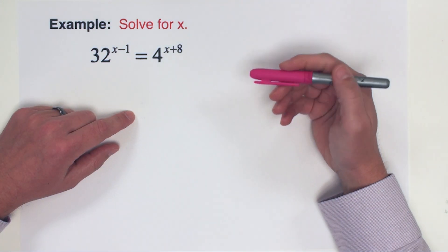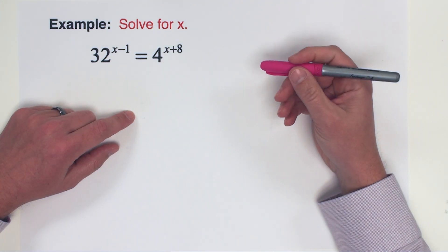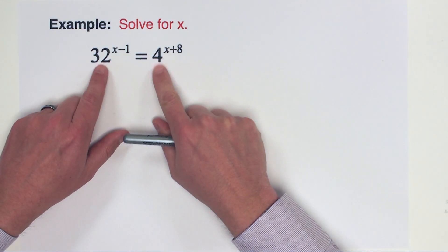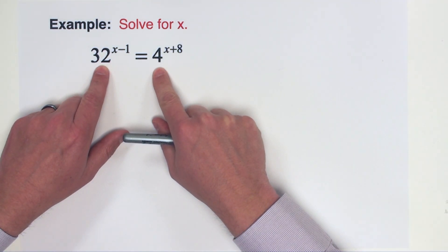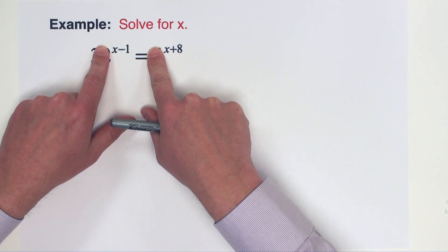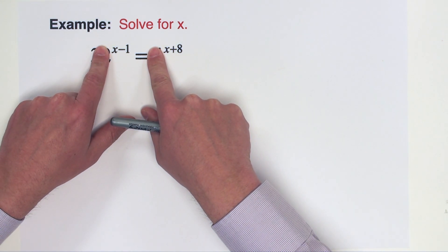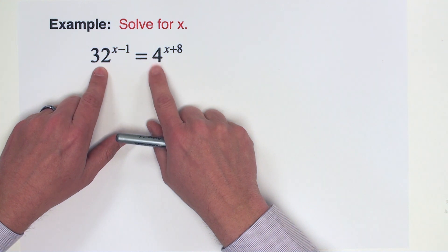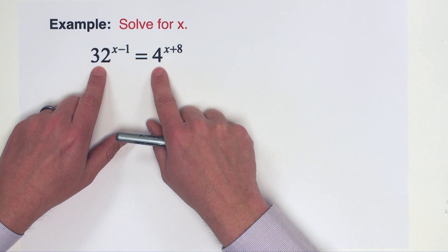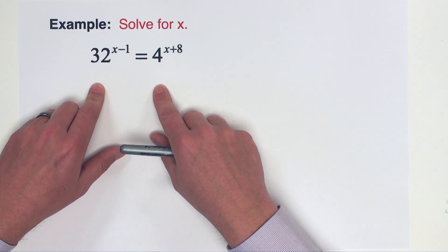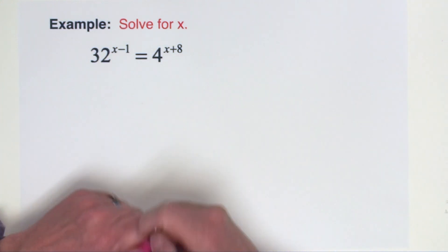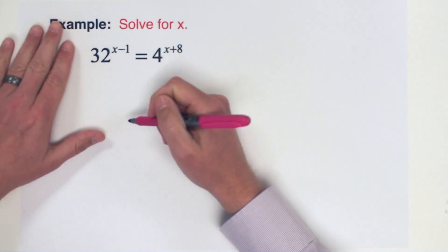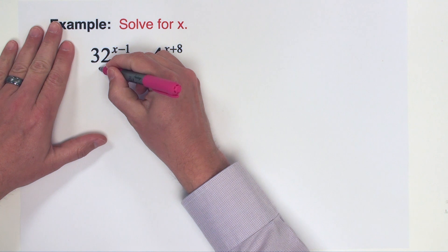Next example problem, just like the last one, our first objective is to make the bases match. The 32 and the 4 need to be made to be the same number so that we can then remove those numbers and work with just the exponents. This problem, however, is a little bit different than the last problem in that the larger number 32 is not a power of 4. So what we're going to have to do is rewrite both of these bases as maybe a smaller base raised to a power.